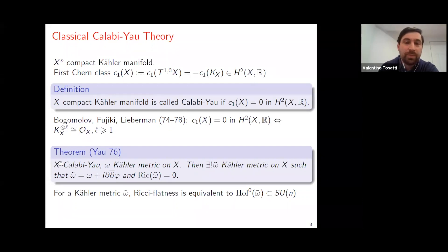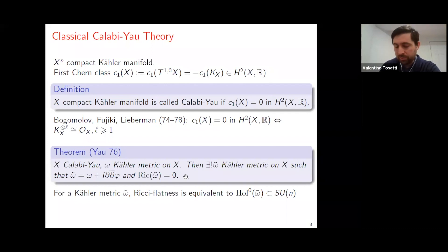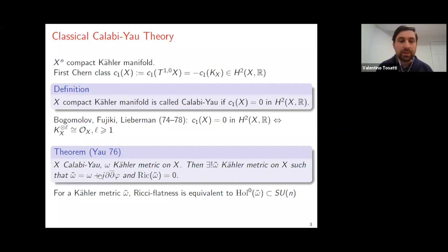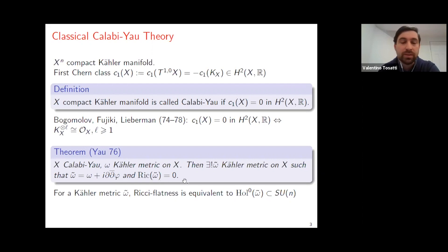The fundamental theorem, conjectured by Calabi in the 50s and proved by Yau in 1976, is that if you have a Calabi-Yau manifold and a Kähler metric Omega on X, then there is a unique Kähler metric Omega-tilde on the same manifold such that the Kähler forms of Omega-tilde and Omega are cohomologous — they differ by dd-bar of some smooth real-valued function phi — and the Ricci curvature of the new Kähler metric vanishes identically. Here you can just think of this as the usual Riemannian Ricci curvature from Riemannian geometry.